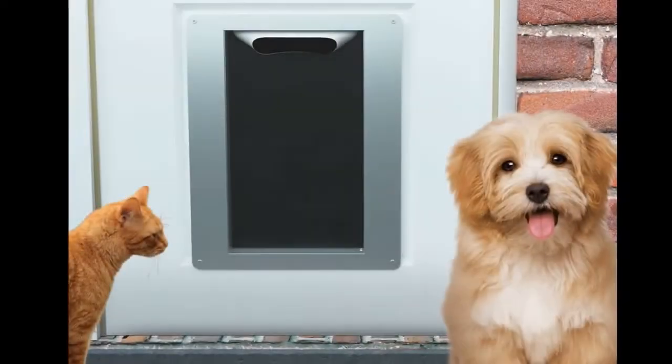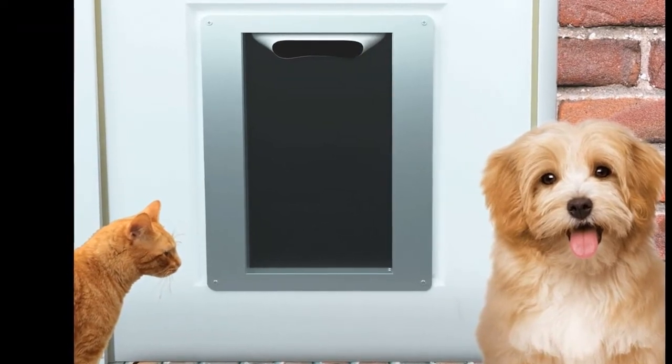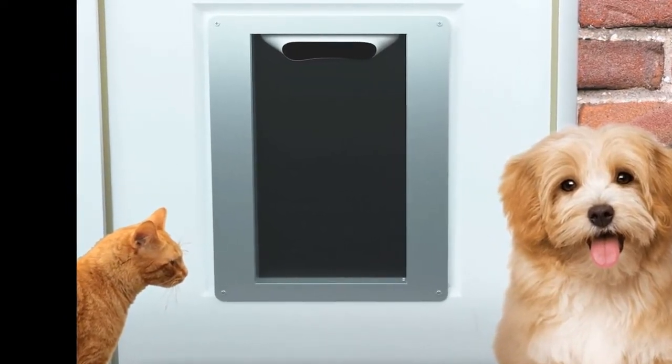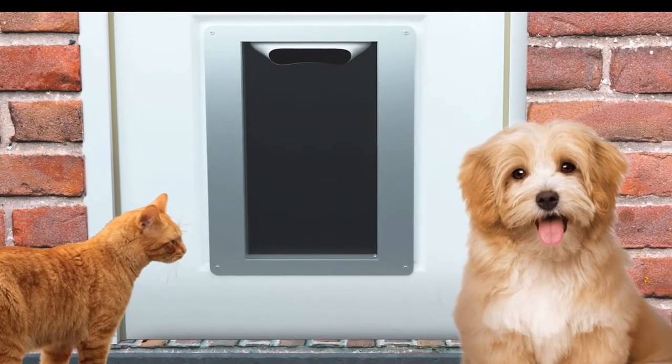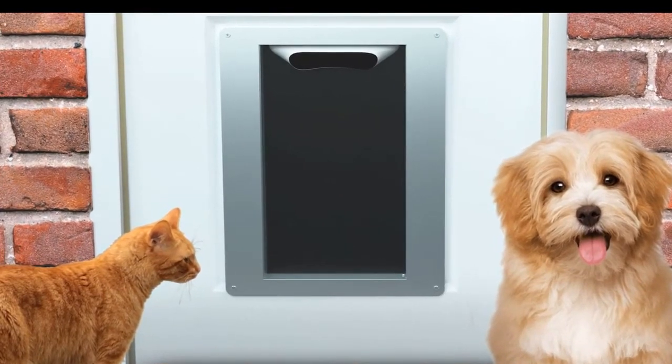Instead of a wireless chip reader, the Petvation uses an array of infrared cameras on either side of the door with a 120-degree field of view and IR boosting illumination to read and identify your pet based on its appearance, the same way your smartphone reads and identifies your face to provide instant access to your device.